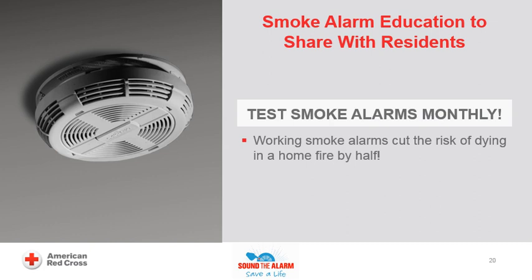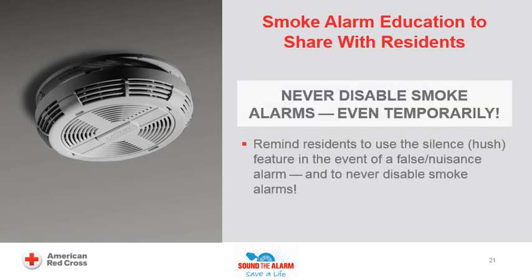The educator will share the following with residents: Test smoke alarms monthly — remind residents to test all smoke alarms monthly to make sure they're in working order, since working smoke alarms cut the risk of dying in a home fire by half. Never disable smoke alarms, even temporarily — remind residents to use the silence/hush feature in the event of a false nuisance alarm. If residents experience frequent false nuisance alarms, they should consider relocating the unit to another location.